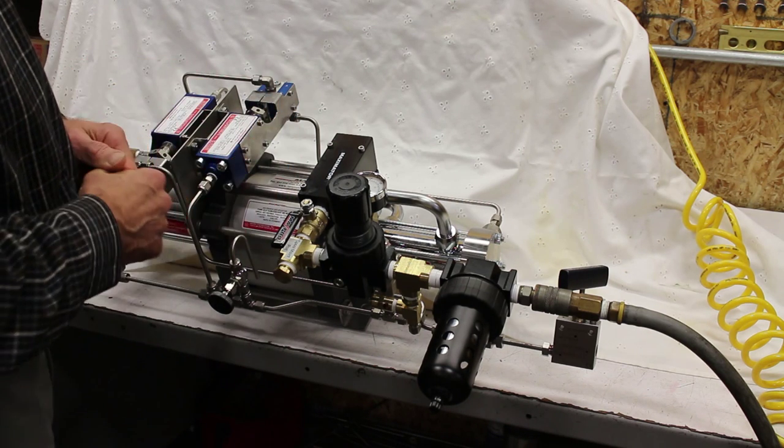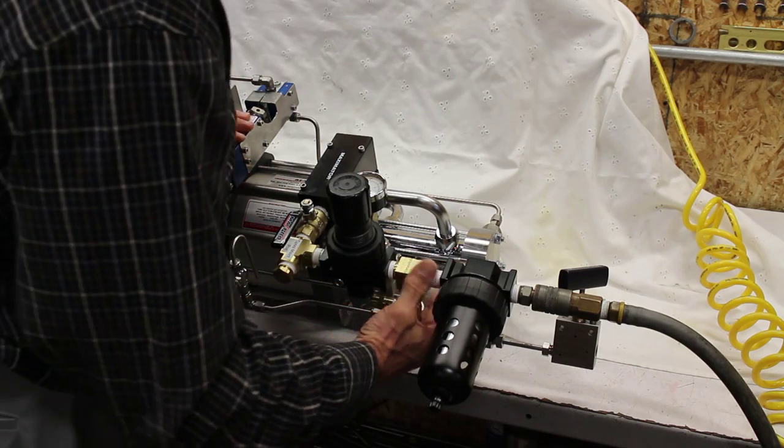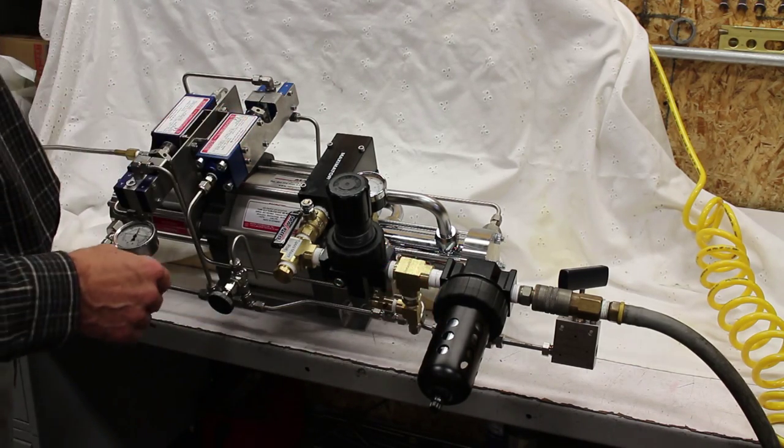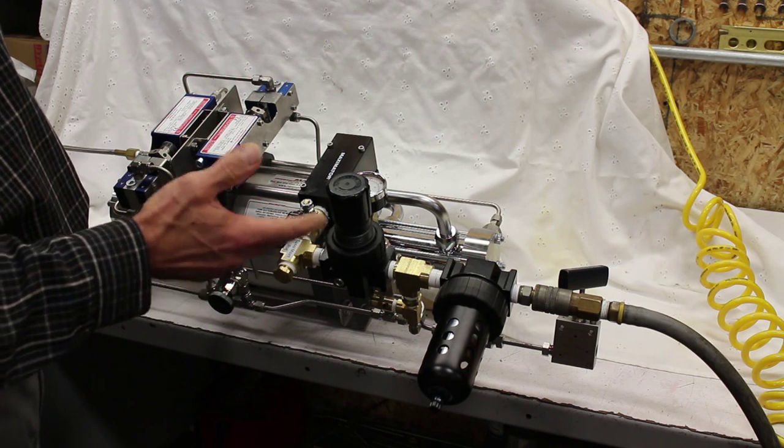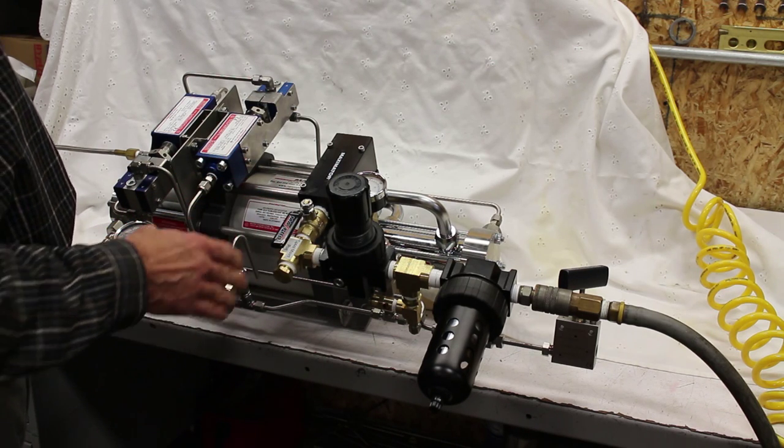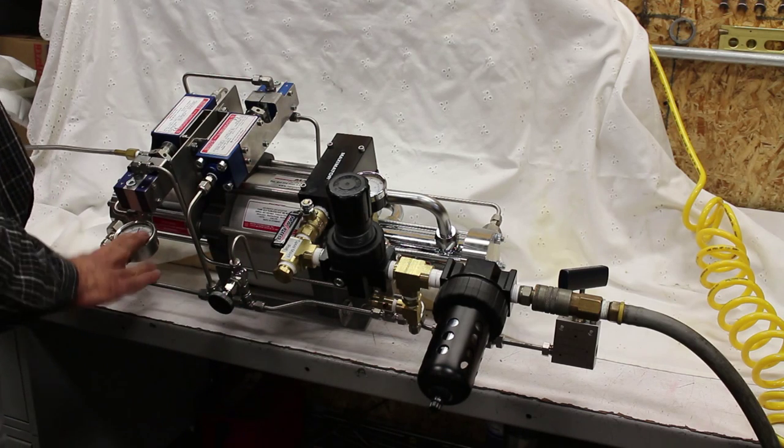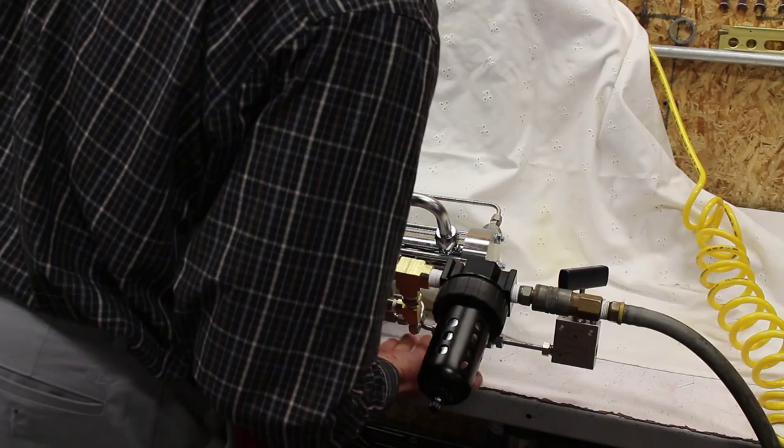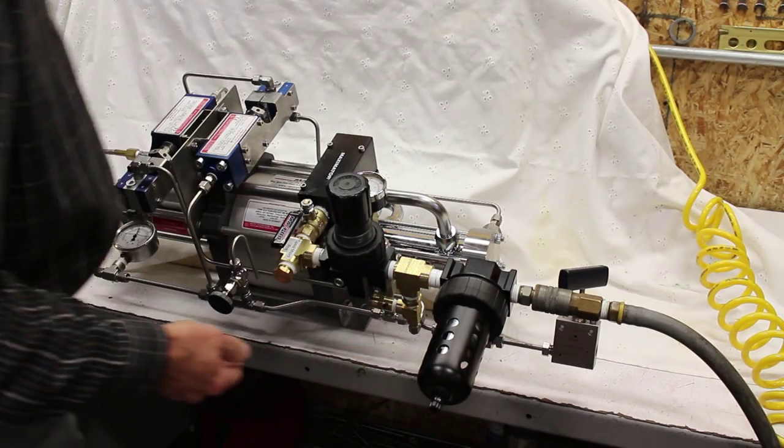As part of the safety part of this, there's a safety relief valve set for 1,500 psi in this case. That's adjustable. It's factory set on a predetermined level, but that is adjustable. Again, a vent valve, outlet pressure gauge, and typically an inline filter on the outlet.